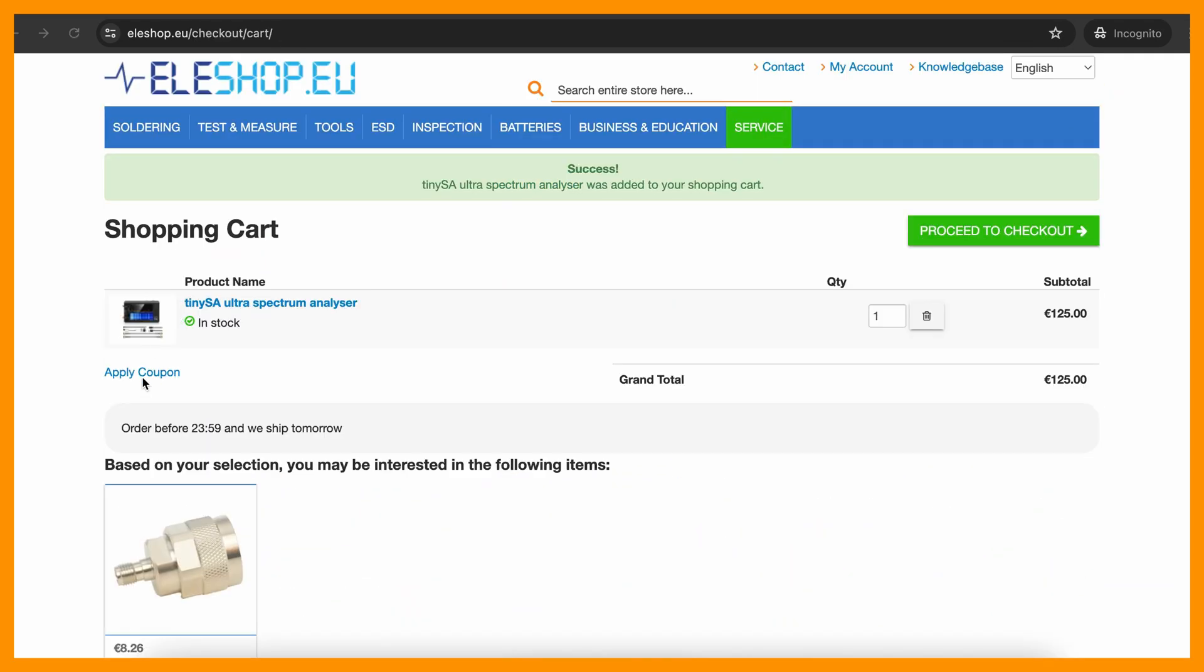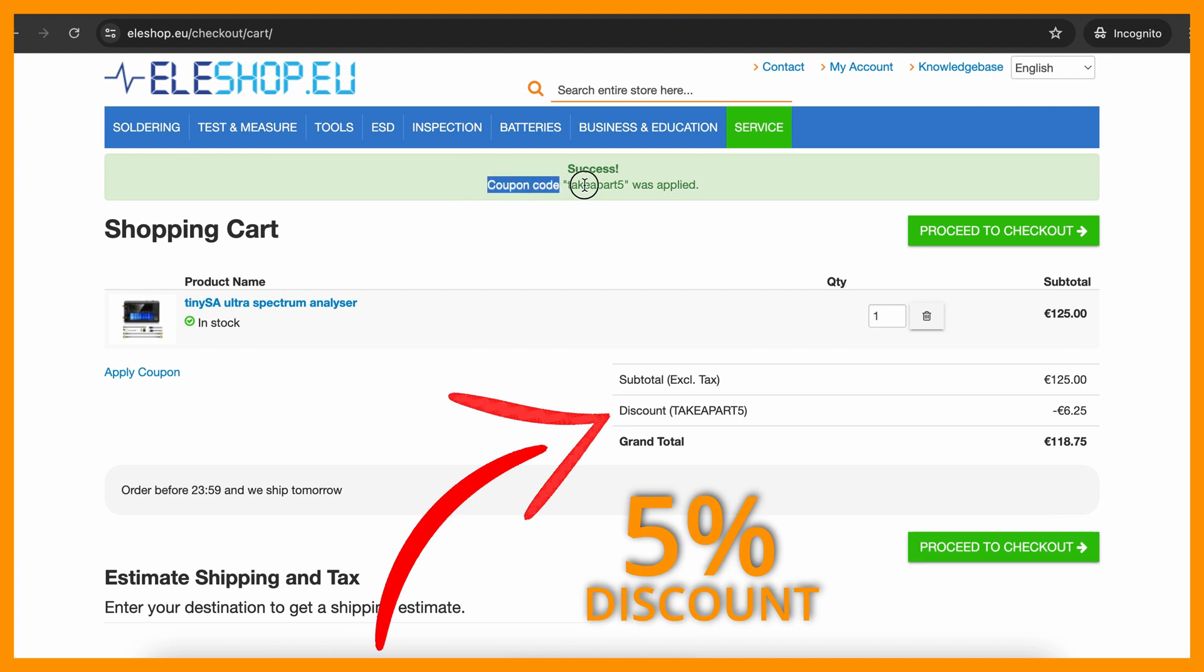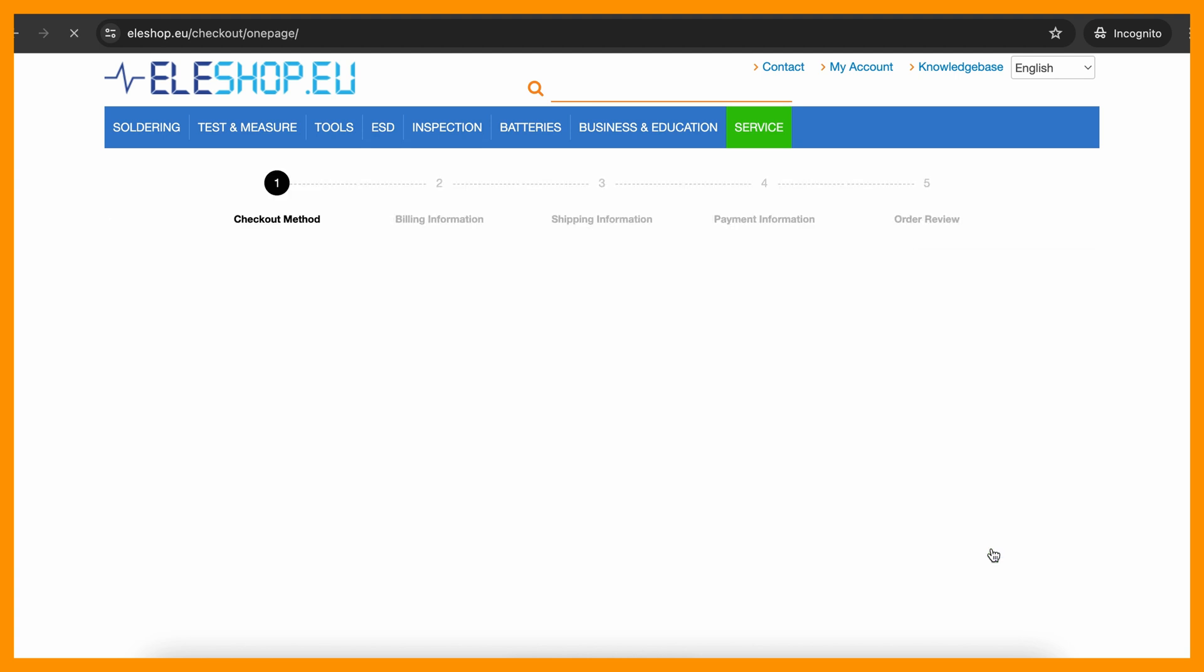And also use coupon code TAKAPART5 at checkout to get 5% discount on selected devices. So once again, ELESHOP.EU and coupon code TAKAPART5. First link in description below.